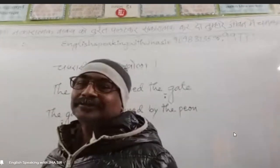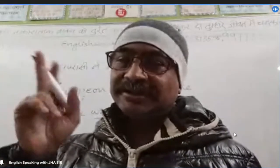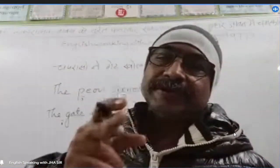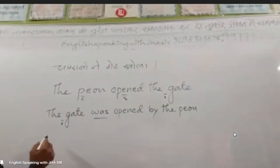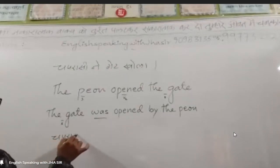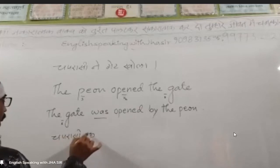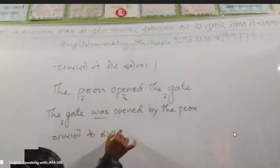Jaya, ask the same question to Sivang. Sivang, what should be the Hindi of the lower sentence? The Hindi of the lower sentence is: Chaprasi ke dwara gate khola gaya.